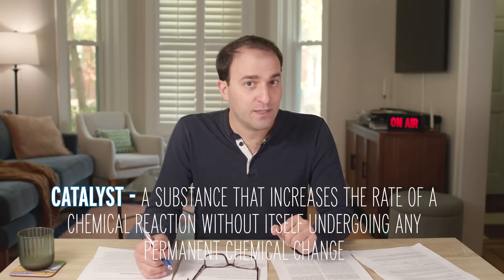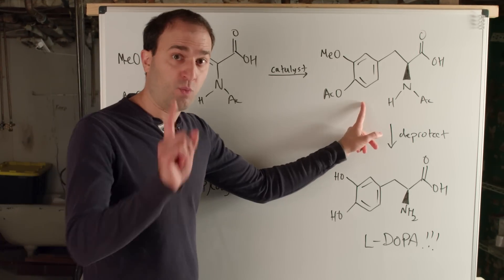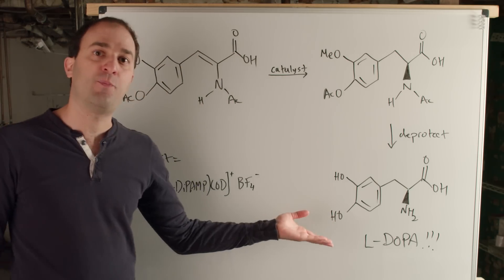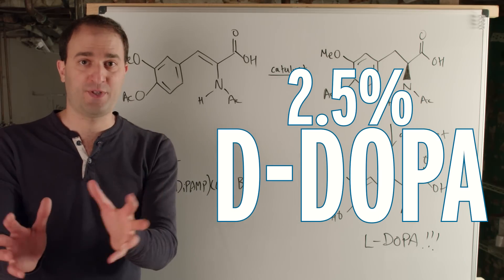If you could figure out how to make L-DOPA catalytically, that would be a commercial hit and a chemical hit — a commercial hit because you are making an incredibly necessary drug, and a chemical hit because you're solving a fundamental problem in chemistry. And Bill Knowles was the first person to figure out how to do it. This right here is the heart of the reaction that he discovered: you start with this, you add this catalyst, and you get this molecule, which after a quick deprotection step is L-DOPA. The yield that Bill Knowles got was 97.5% L-DOPA and only 2.5% D-DOPA.